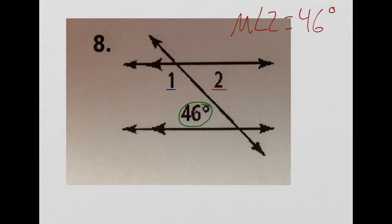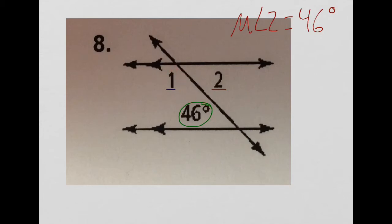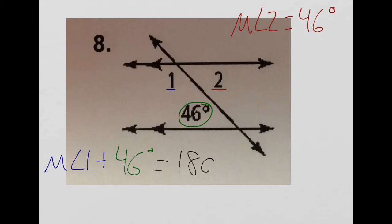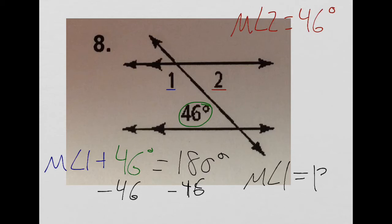There are two different ways to find the measure of angle 1. Angle 1 and angle 2 form a linear pair, so measure of angle 1 plus measure of angle 2 equals 180. Also, since these lines are parallel, angle 1 and the 46-degree angle are same-side interior angles — on the same side of the transversal — so they are supplementary. Measure of angle 1 plus 46 degrees equals 180 degrees. Subtracting 46 from both sides gives measure of angle 1 equals 134 degrees.